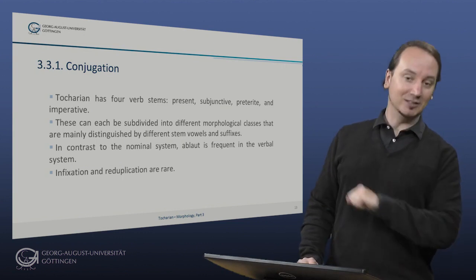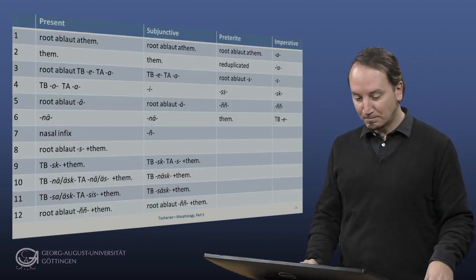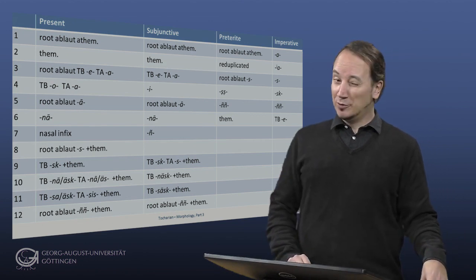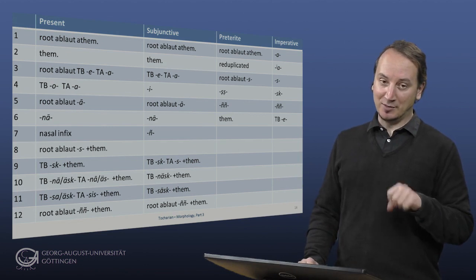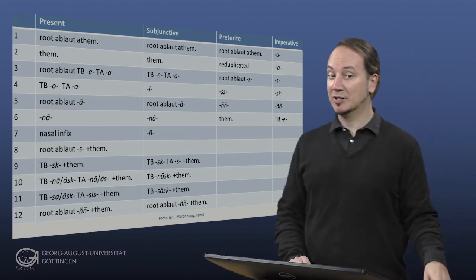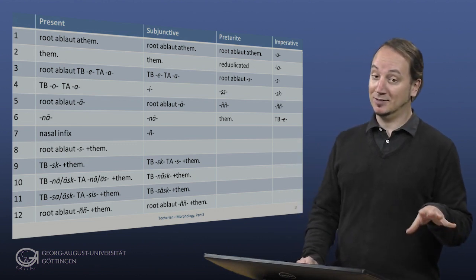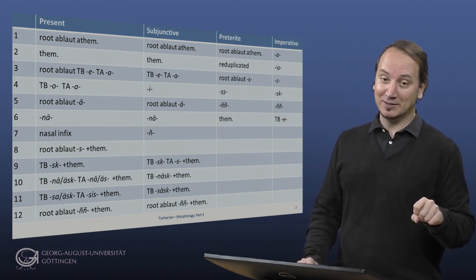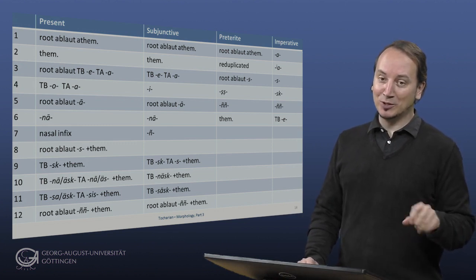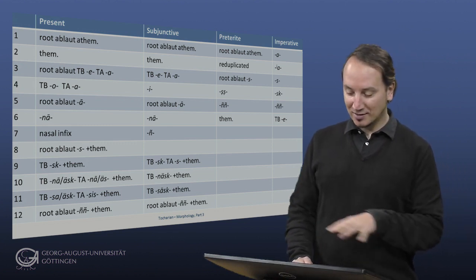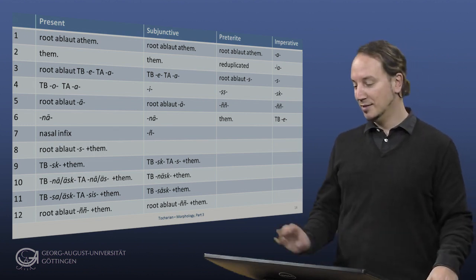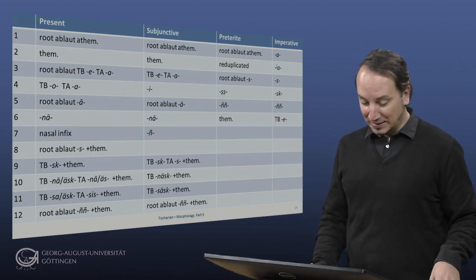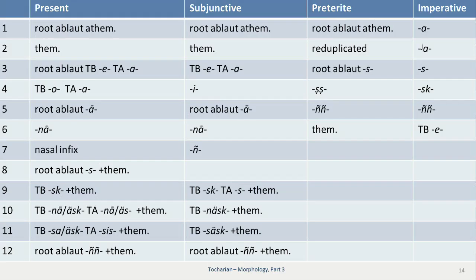Infixation and reduplication that are kind of prominent in, for example, Homeric Greek or Vedic Sanskrit, are rarer in Tocharian. So here's an overview of the four different verbal stems with their different stem classes. There's actually no other Indo-European language exhibiting such a rich system of stem classes. And for convenience sake, we'll only go over the present and the preterite classes and skip the subjunctive classes because it's very similar to the present, and skip the imperative for now.